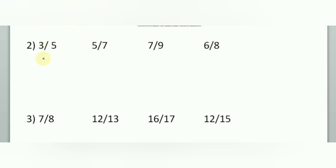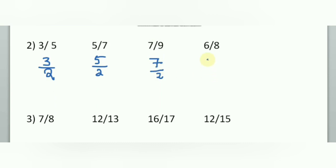Another example: 3 by 5, 5 by 7, 7 by 9, 6 by 8. Differences: 3 by 5 → 3 by 2; 5 by 7 → 5 by 2; 7 by 9 → 7 by 2; 6 by 8 → 6 by 2. All differences are 2. Dividing: 3 by 2 = 1 remainder 1; 5 by 2 = 2 remainder 1; 7 by 2 = 3 remainder 1; 6 by 2 = 3 exactly.